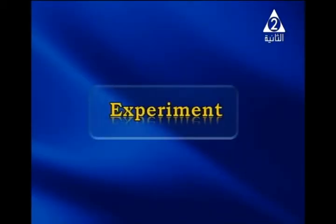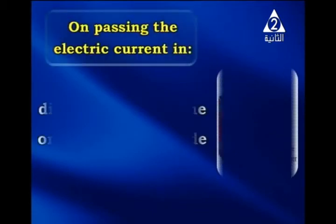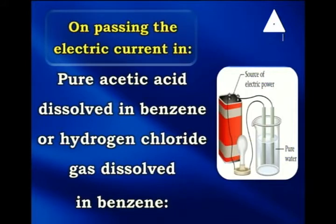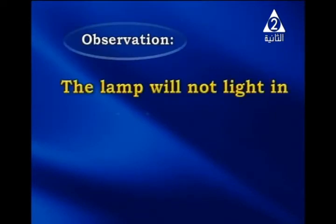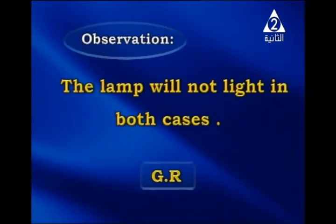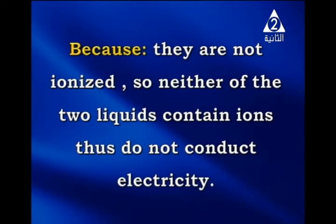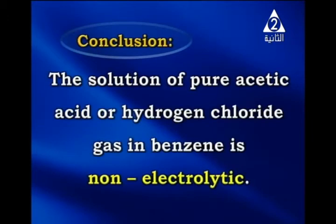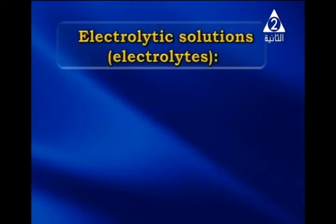Another experiment to show a non-electrolyte solution: on passing electric current through pure acetic acid dissolved in benzene, or hydrogen chloride gas dissolved in benzene, we find that the lamp will not light in both cases. The reason is that they are not ionized, so neither liquid contains ions and thus they don't conduct electricity. The conclusion: solutions of pure acetic acid or hydrogen chloride gas in benzene are non-electrolytic solutions.